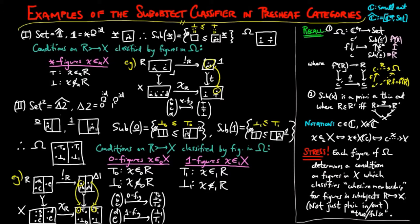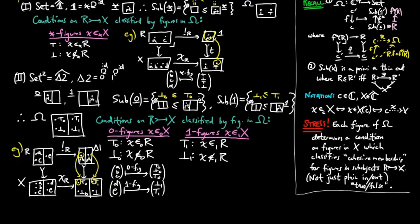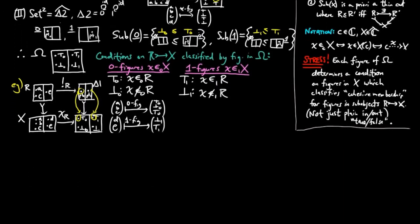So in these first two examples, we haven't yet seen cohesive membership giving rise to conditions other than whether a figure is in a sub-object or it is not. However, in the category of evolving sets, things get a little more interesting.